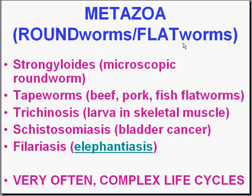Going back to taxonomy again, there are three kinds of worms — three phyla of worms: the roundworms, which are round; the flatworms, which are flat; and then the kind of worms we see in our garden, called annelids. The annelid worms, which are the highest developed segmented worms, don't really cause any human infections. So basically it's roundworms and flatworms — the roundworms are the nematodes and the flatworms are the trematodes.